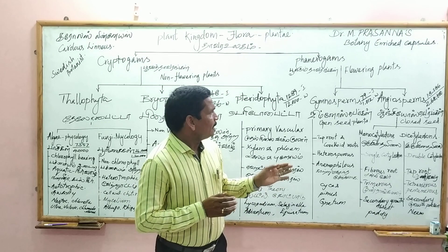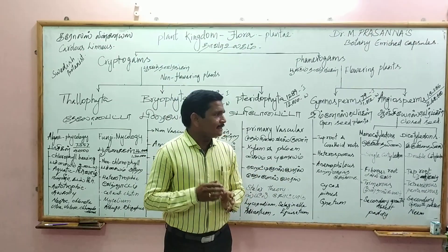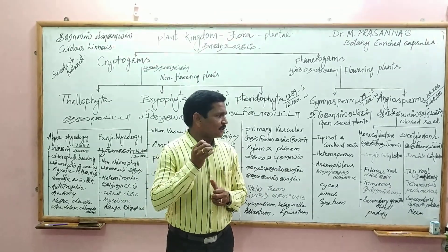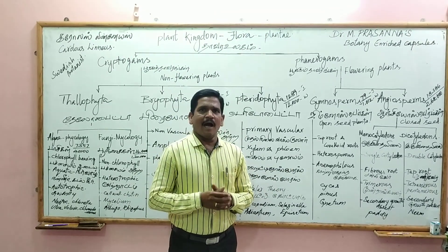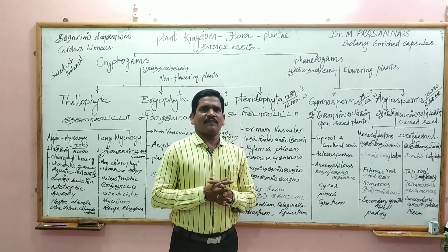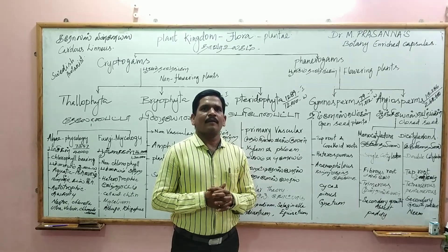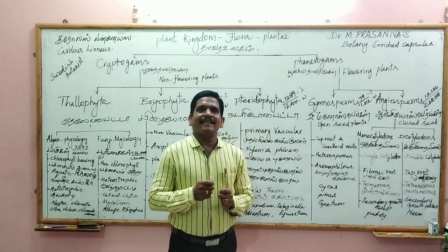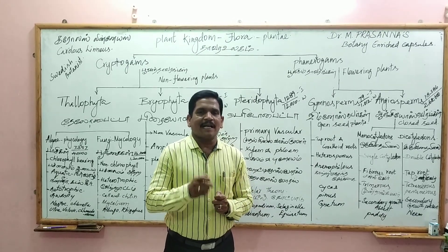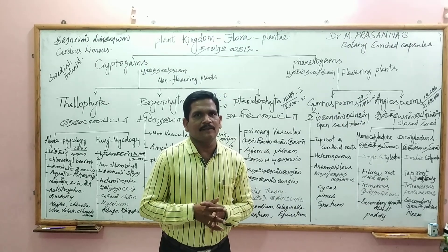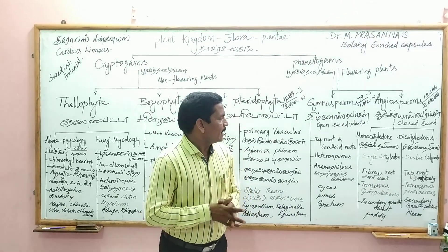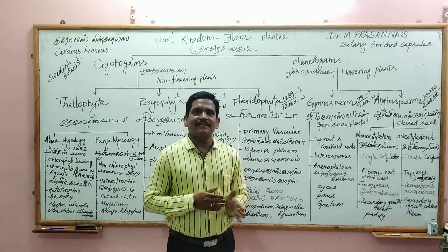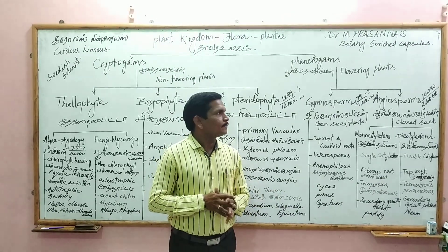The characters of monocotyledons are: single cotyledon, fibrous root system, and trimerous floral class. Secondary growth is absent due to the absence of cambial tissue. Examples include grasses and paddy.